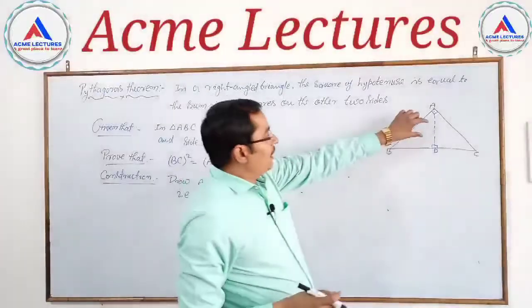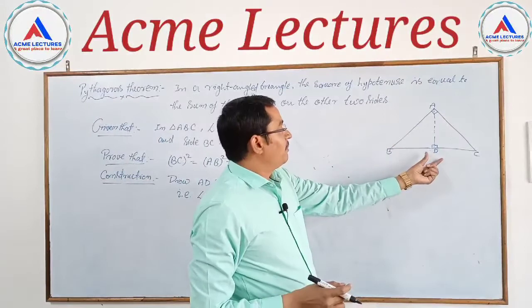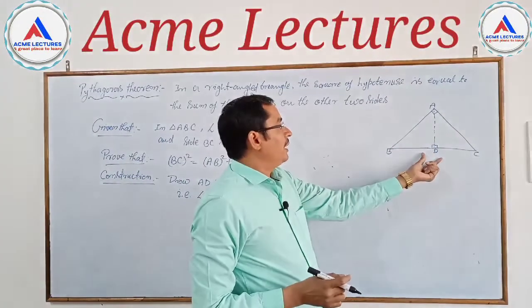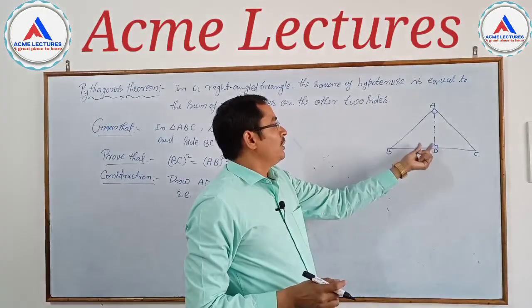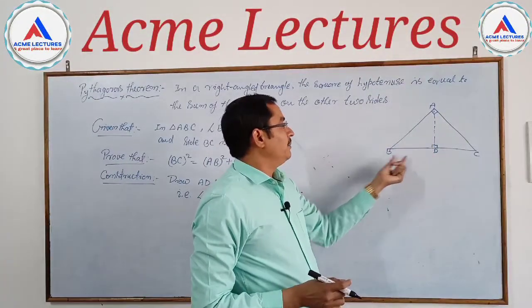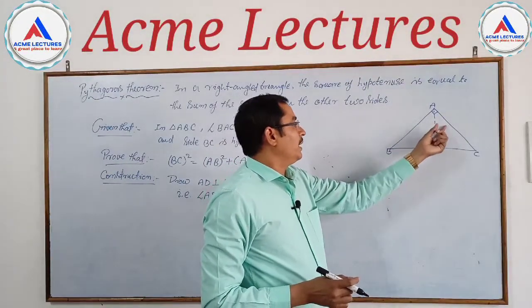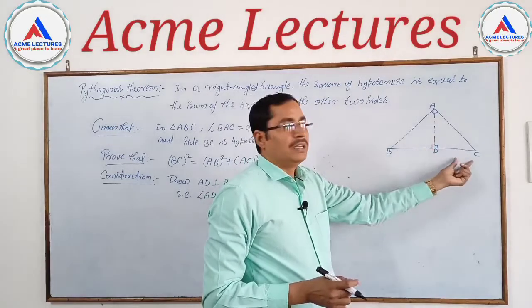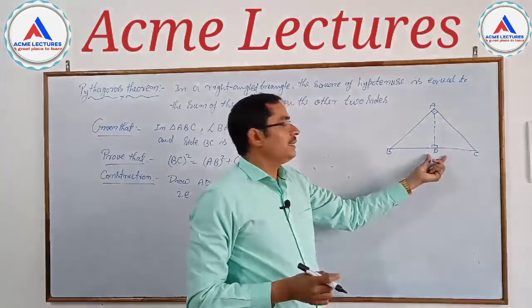Because AD is perpendicular to BC, the angles ADB and ADC are both 90 degree angles.